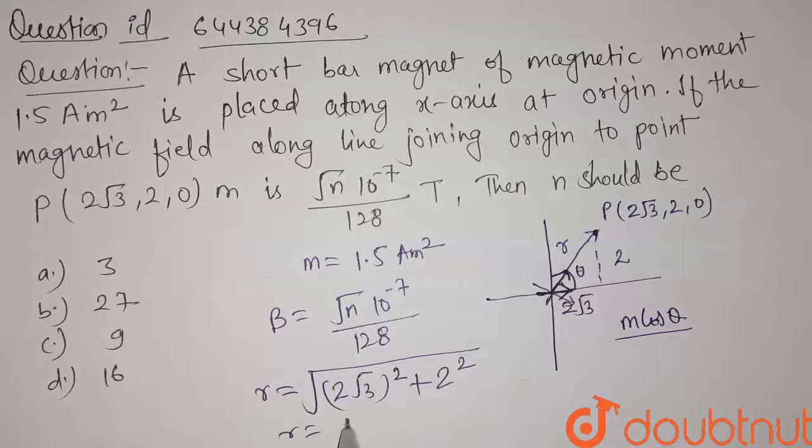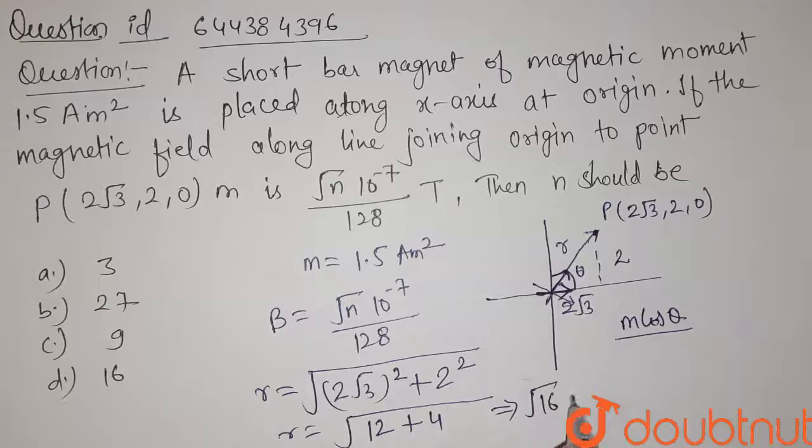So r will be equals to 2 square, 4 into 3, that is 12 plus 2 square 4. So it is equals to √16, that means r is equals to 4.